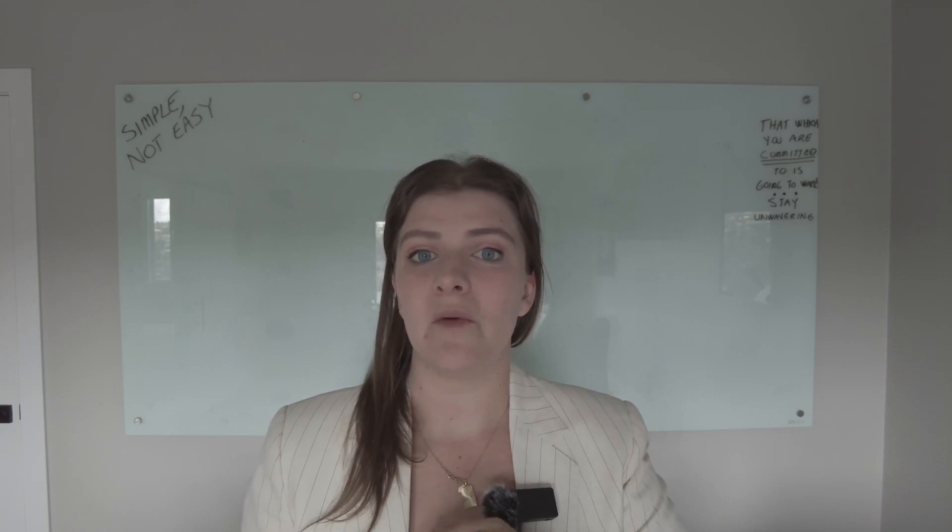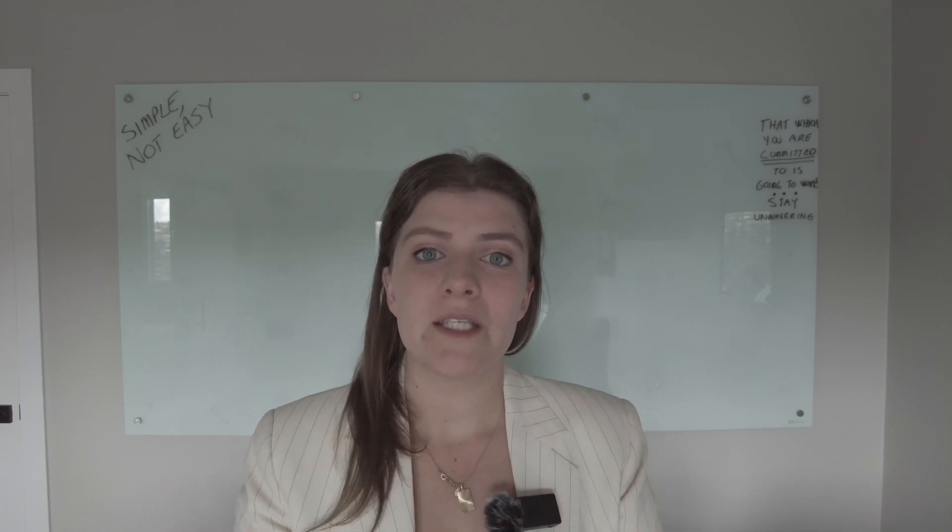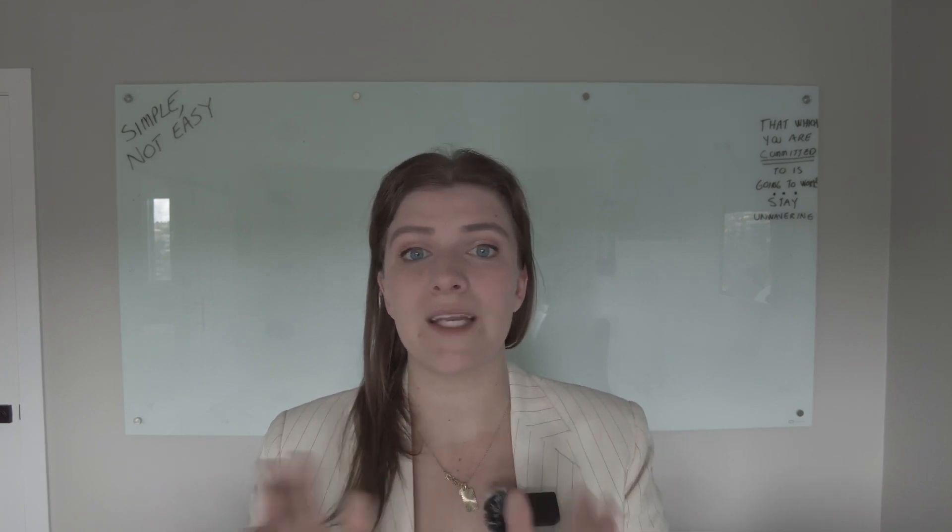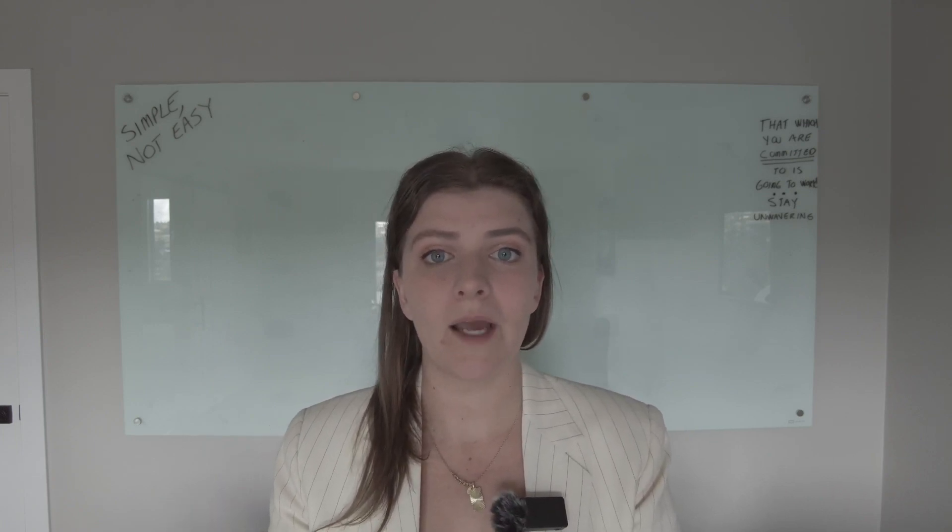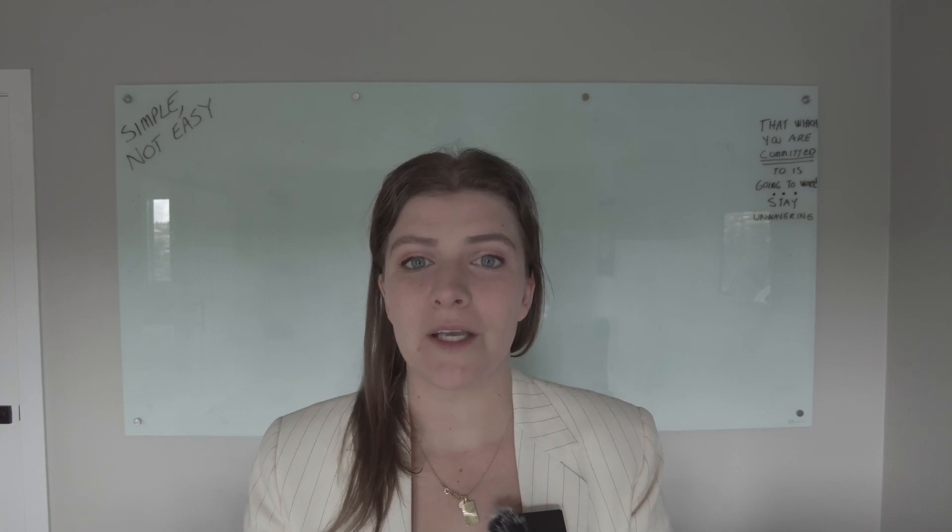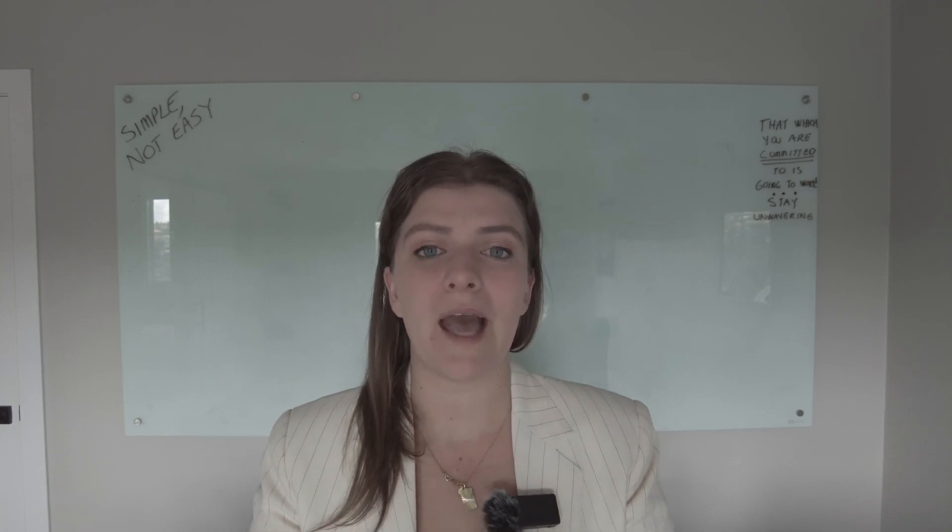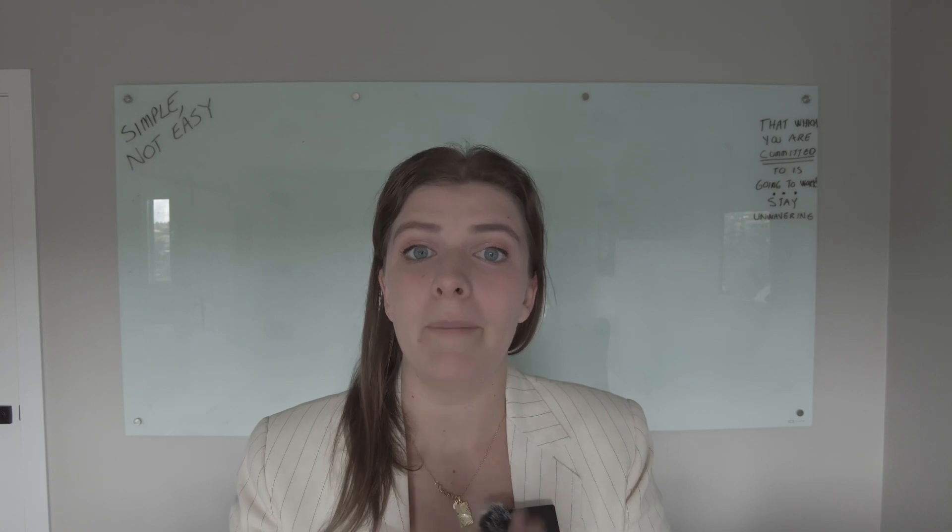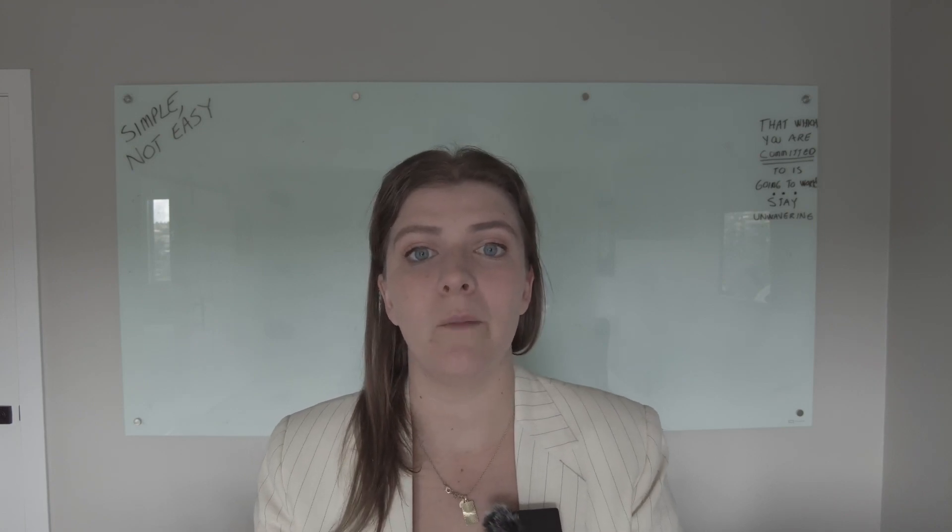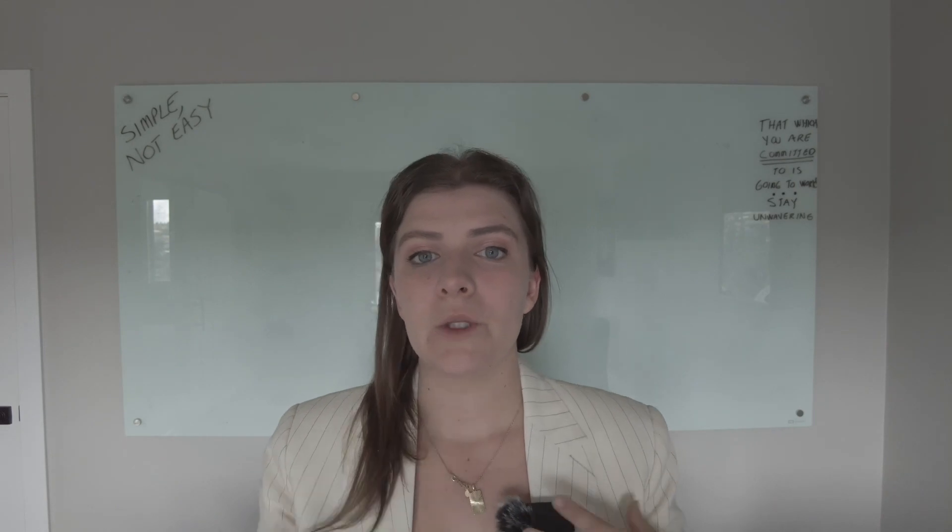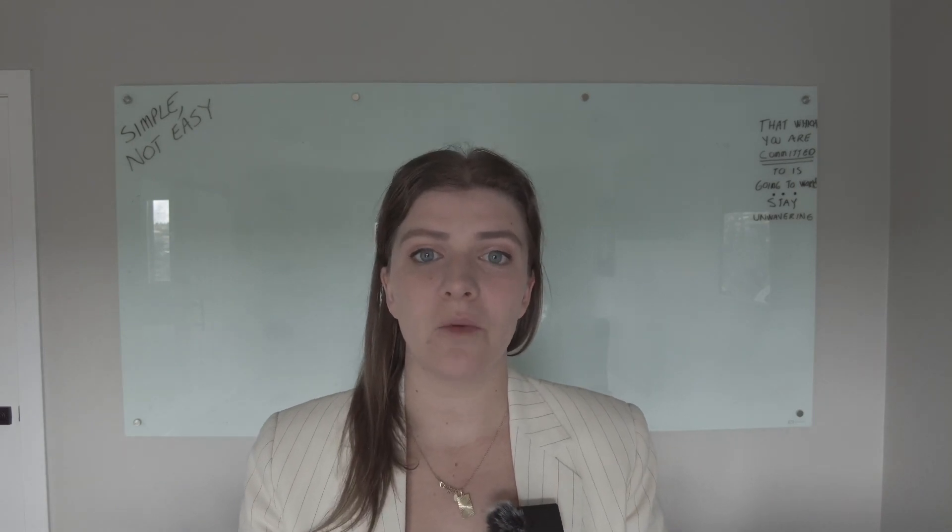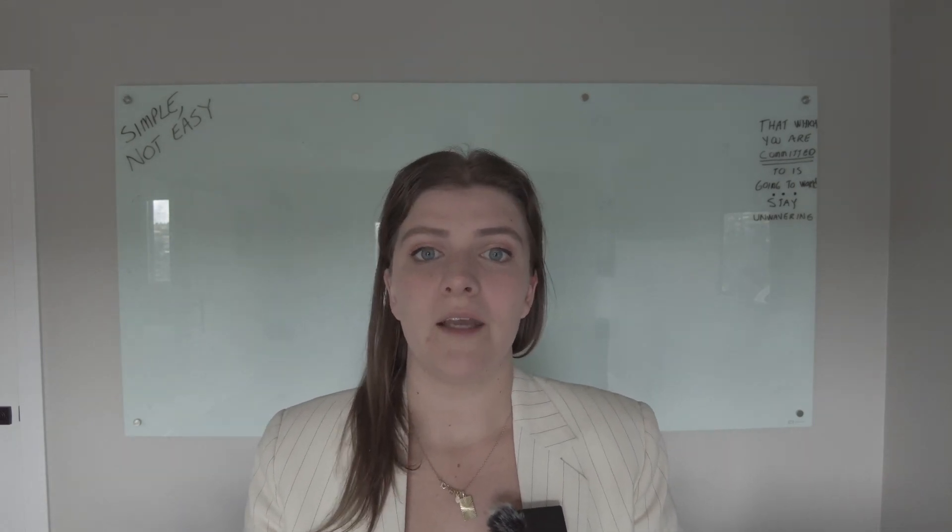For first-time homebuyers, it's usually between 3% and 10%. If it's your second or third home, typically you have the equity from your first home that you can roll over. Down payment can be anywhere between 0% and 20%, usually that 3% to 10% range is more common with first-time homebuyers. Additionally, consider the closing costs, which can typically be averaged out to about 2% to 3% of the total purchase price.